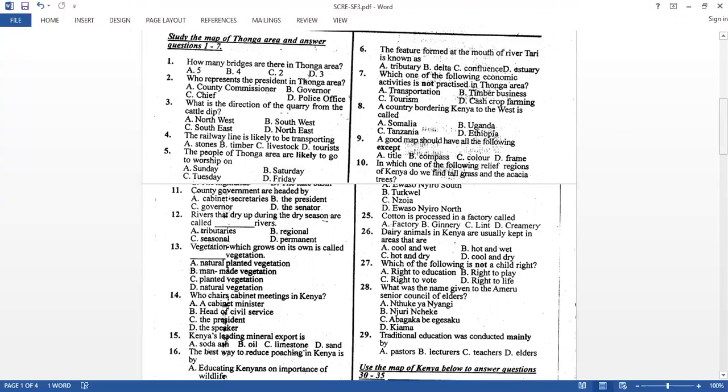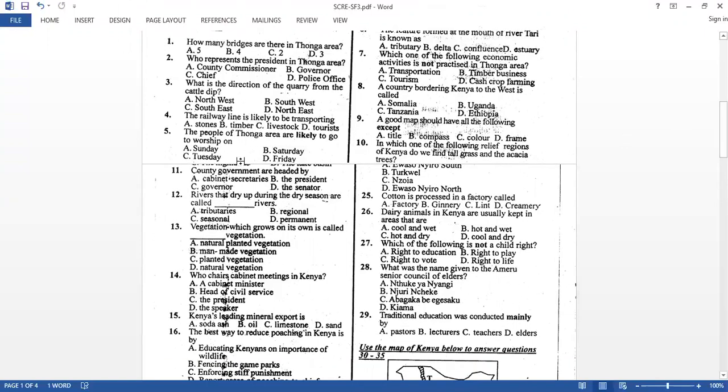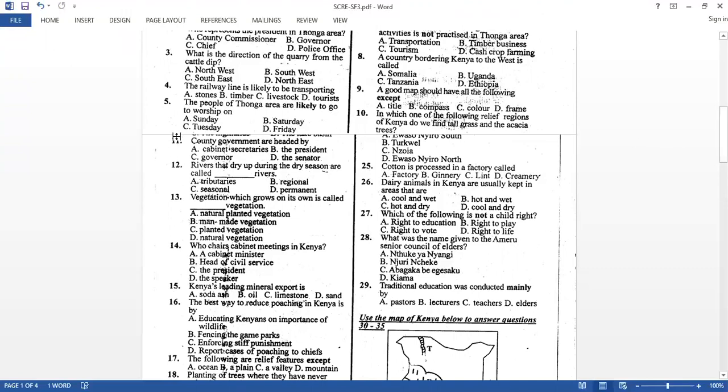In which of the following relief regions of Kenya do we find tall grass and acacia trees. On a flatland that is raised, that one will be found in the plateaus. So number 10, the answer that is plateau is not visible, but all of you maybe can be able to understand that question. Number eleven, county governments are headed by, or who is the head of a county? All of you know that county governments, we have two types of government. We have the national government and the county government. All the 47 county governments are being headed by the governor.